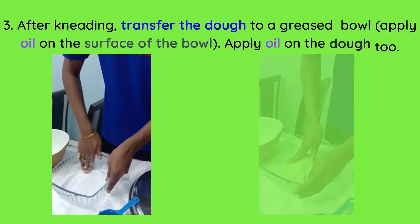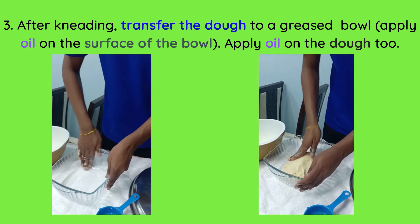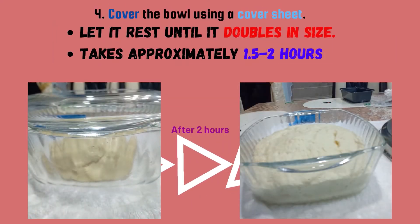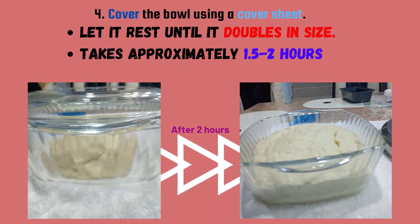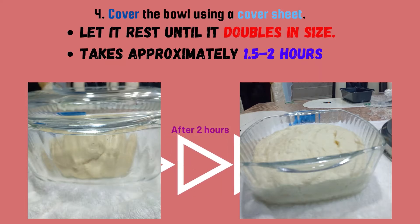After kneading, transfer the dough to a greased bowl — meaning apply some oil on the surface of the bowl. Also apply some oil on the dough to prevent it from drying. The fourth step: we will be covering the bowl using a cover sheet. We are going to let it rest until it doubles in size, which takes approximately 1.5 to 2 hours.